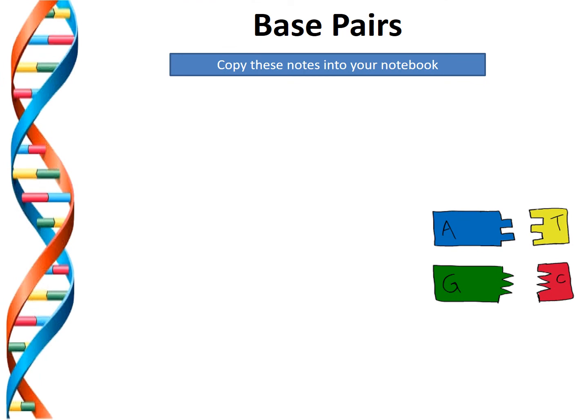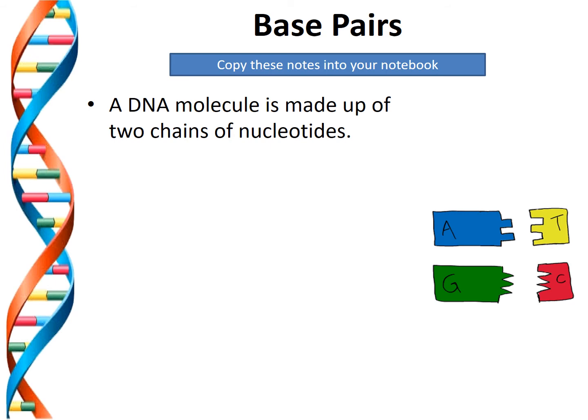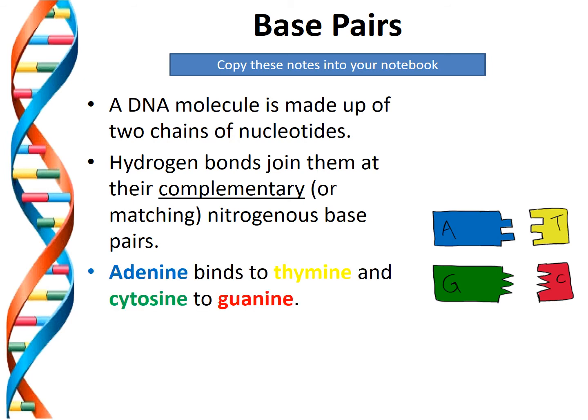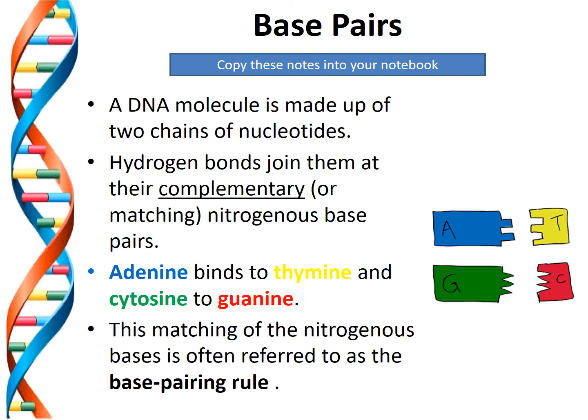Base pairs: a DNA molecule is made up of two chains of nucleotides. Hydrogen bonds join the complementary nitrogenous base pairs. The complementary pairs follow the pattern: adenine binds to thymine and cytosine to guanine. This matching of nitrogenous bases is often referred to as base pairing.